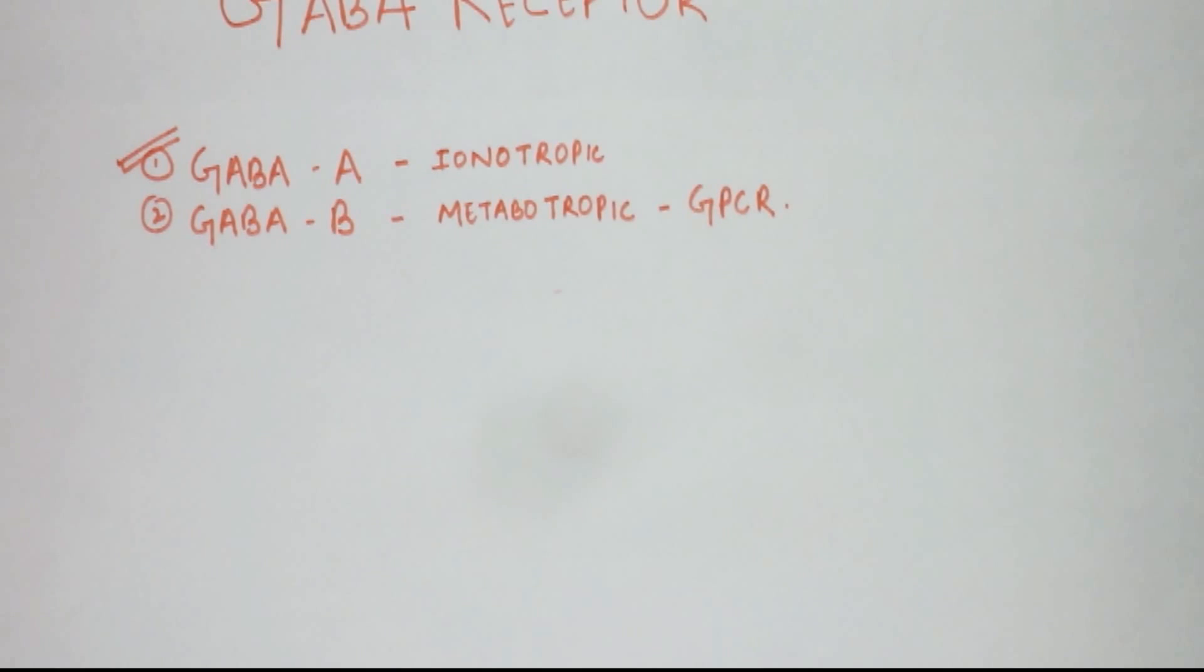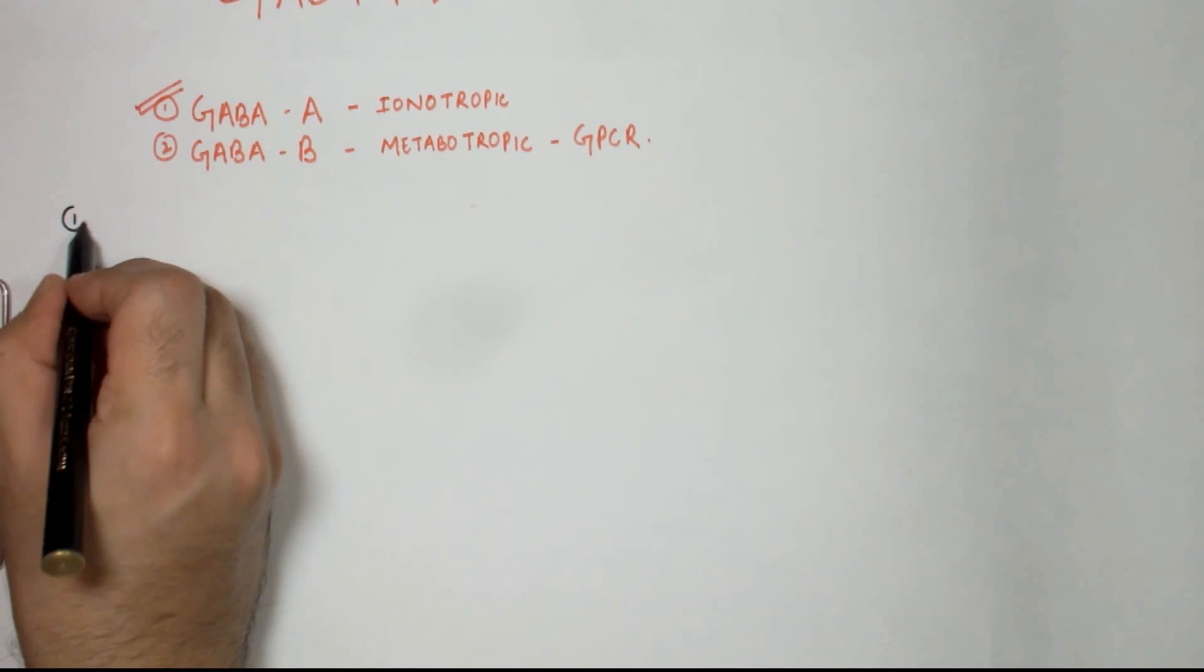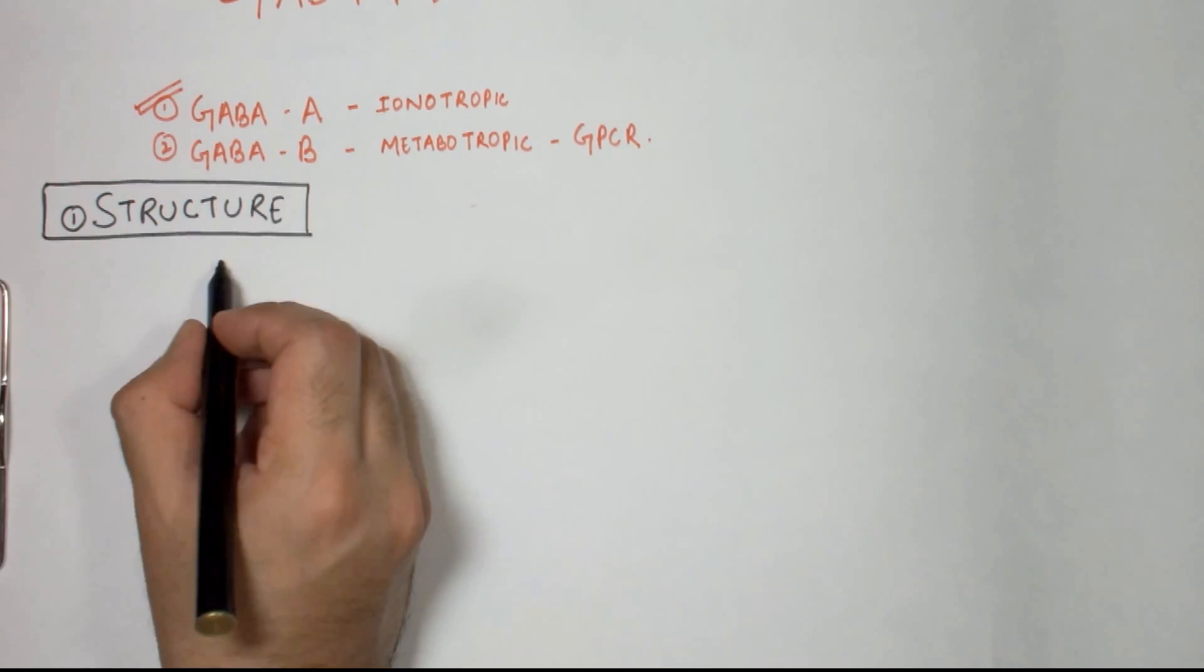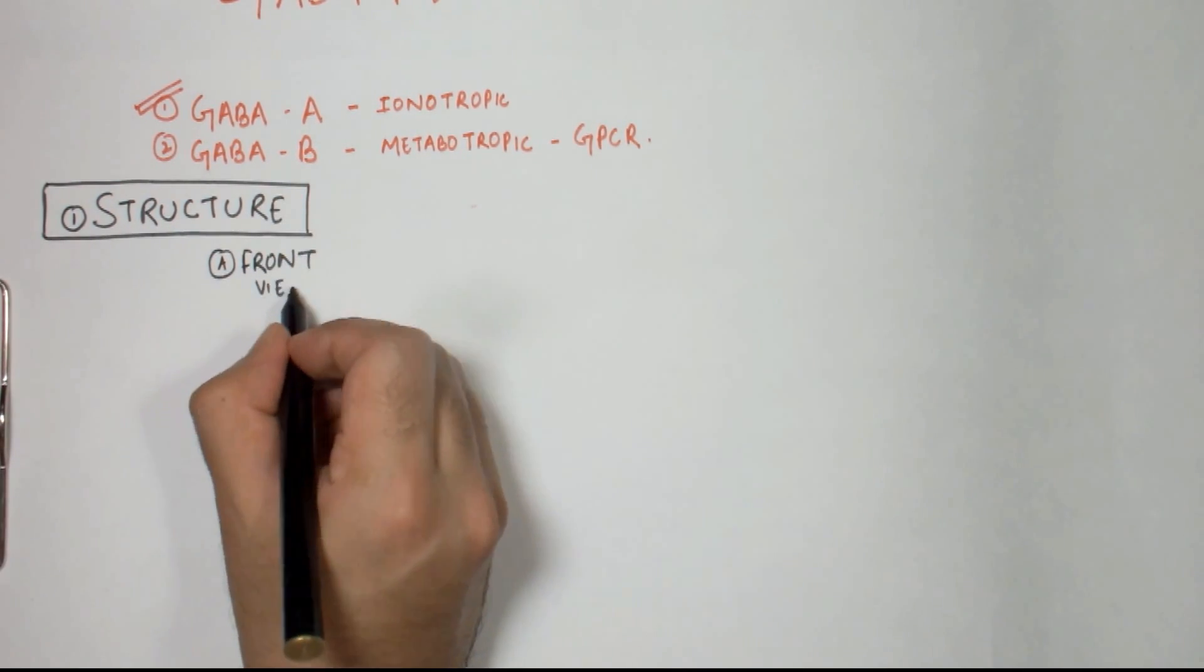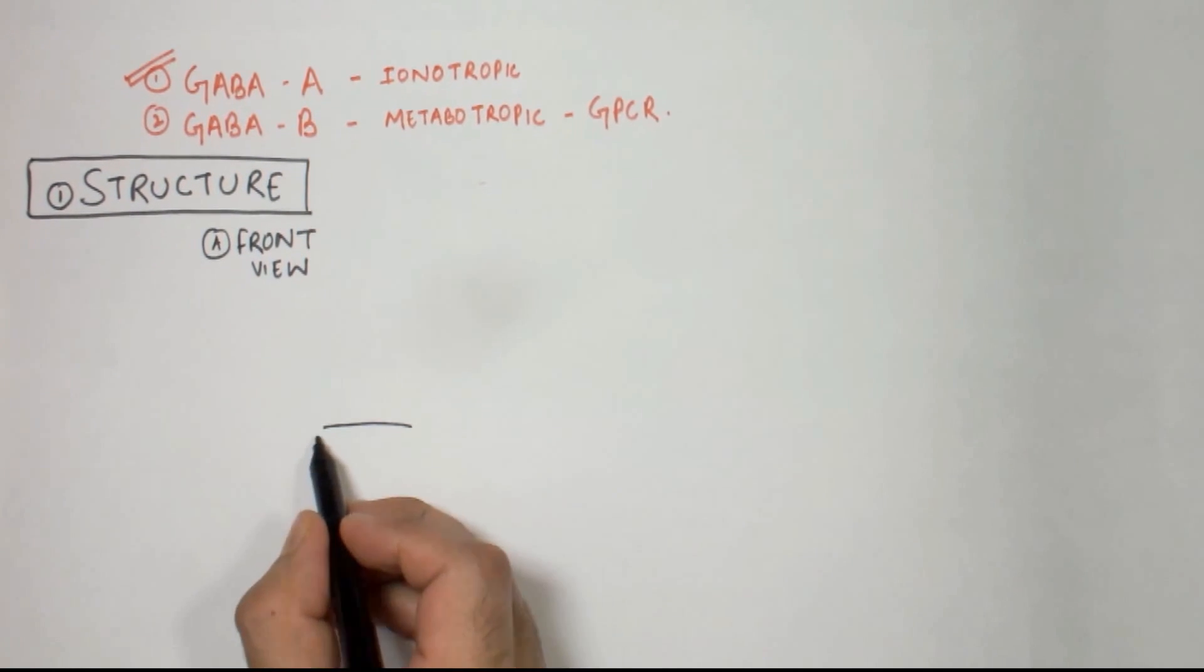Alright, now first of all let's see the structure of the GABA-A receptor. I will try to make two views: the first is the front view and second is the top view of the receptor.